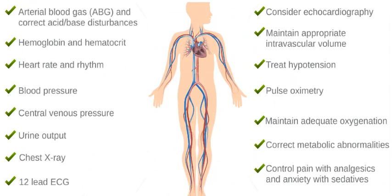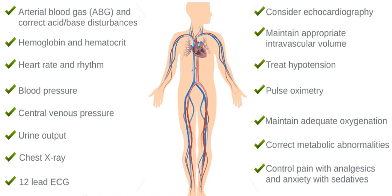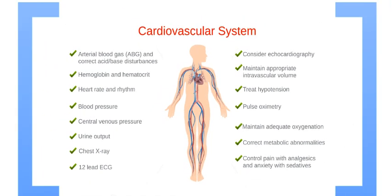Now let's move on to cardiovascular post-resuscitation care. Monitor heart rate and rhythm, blood pressure, urine output, and central venous pressure if available. Lab monitoring should include ABGs, electrolytes, calcium, and glucose. Based on those results, transfuse or correct chemistries as needed.